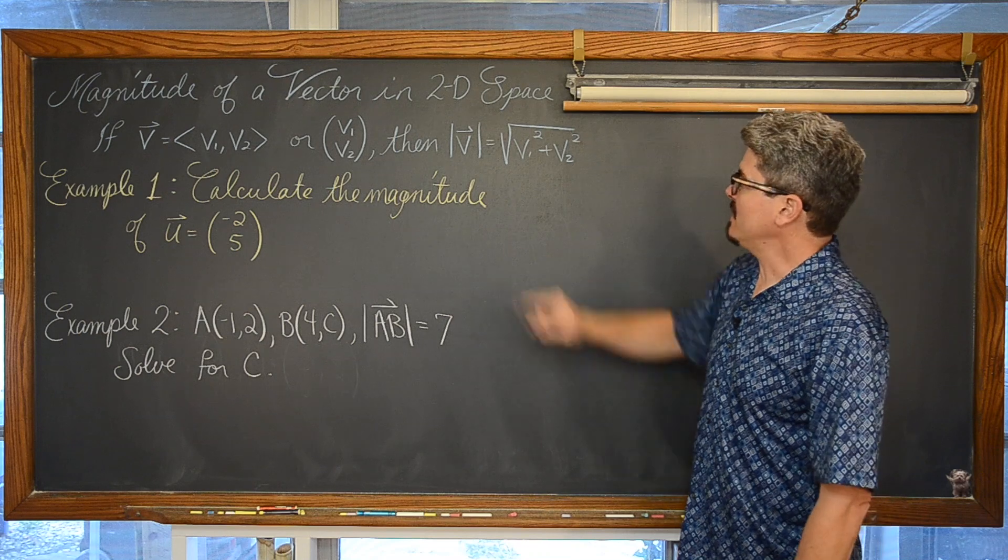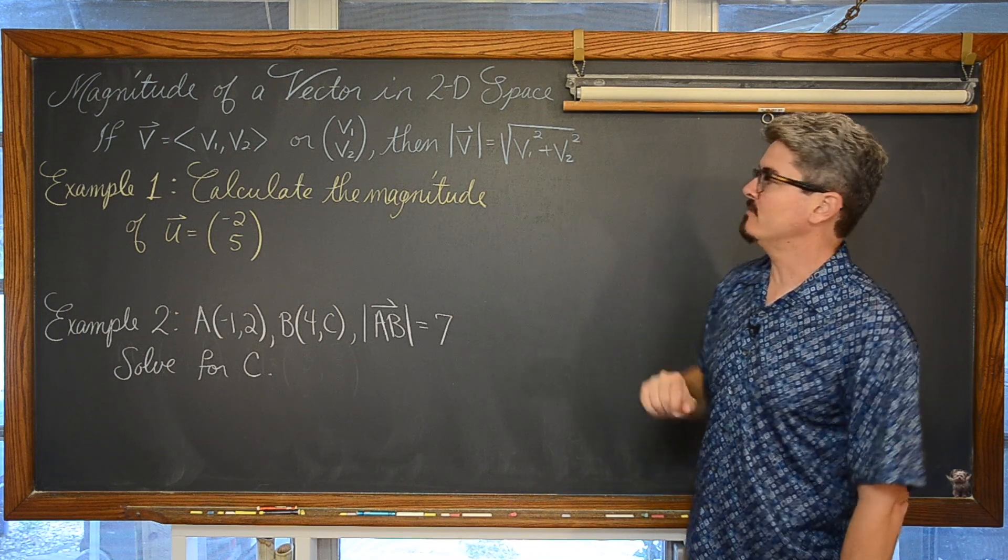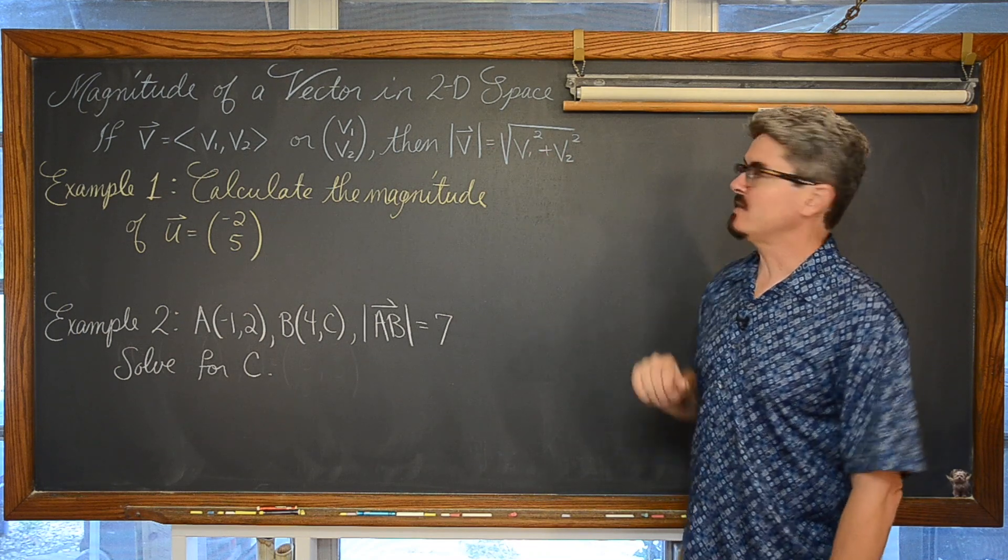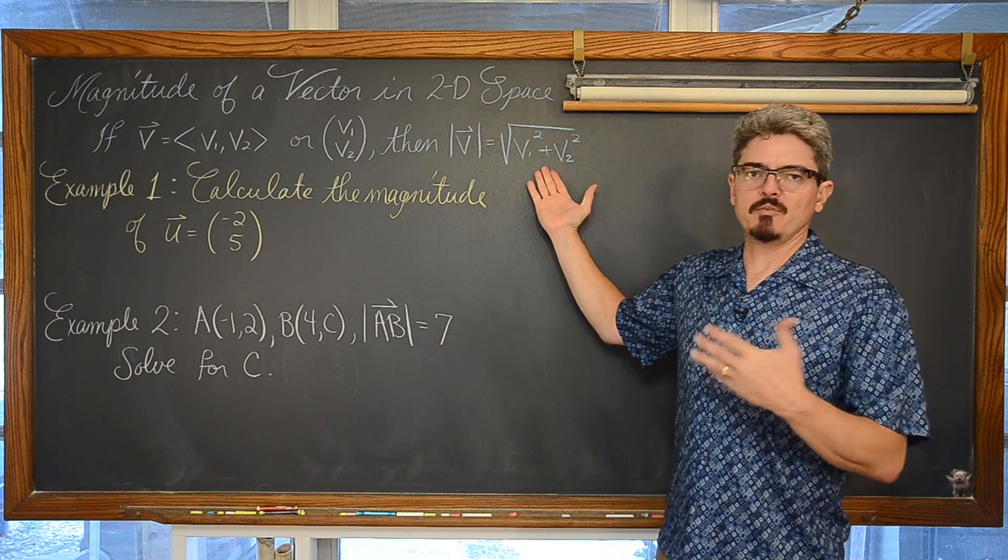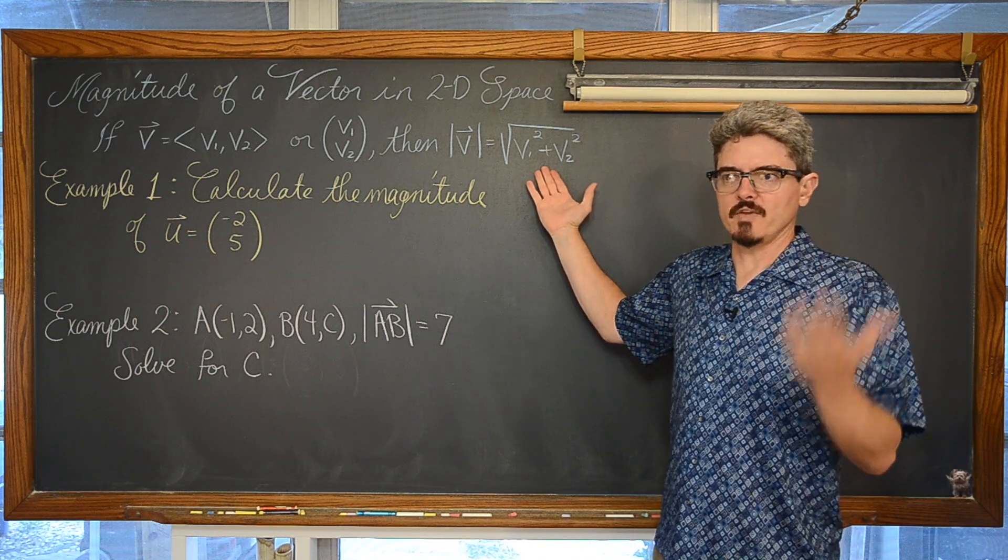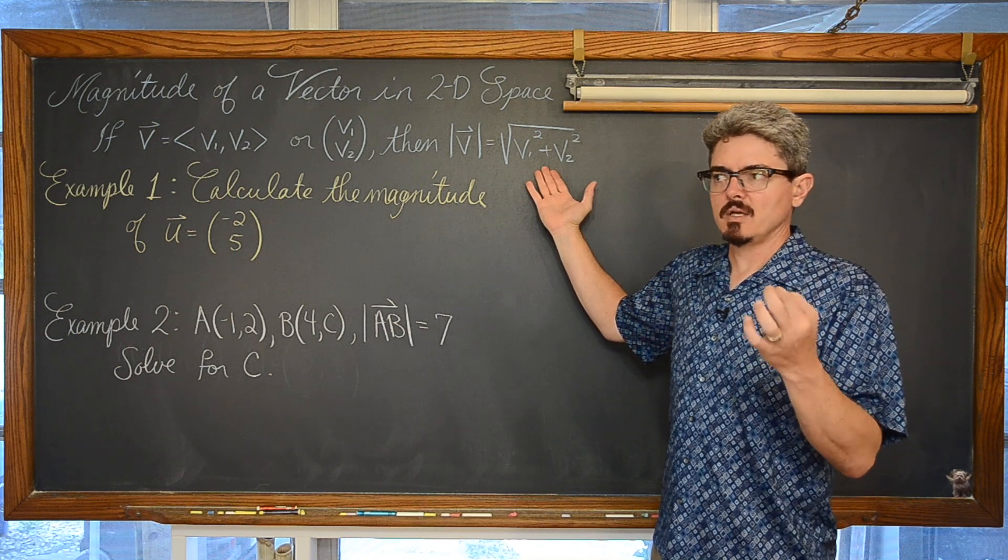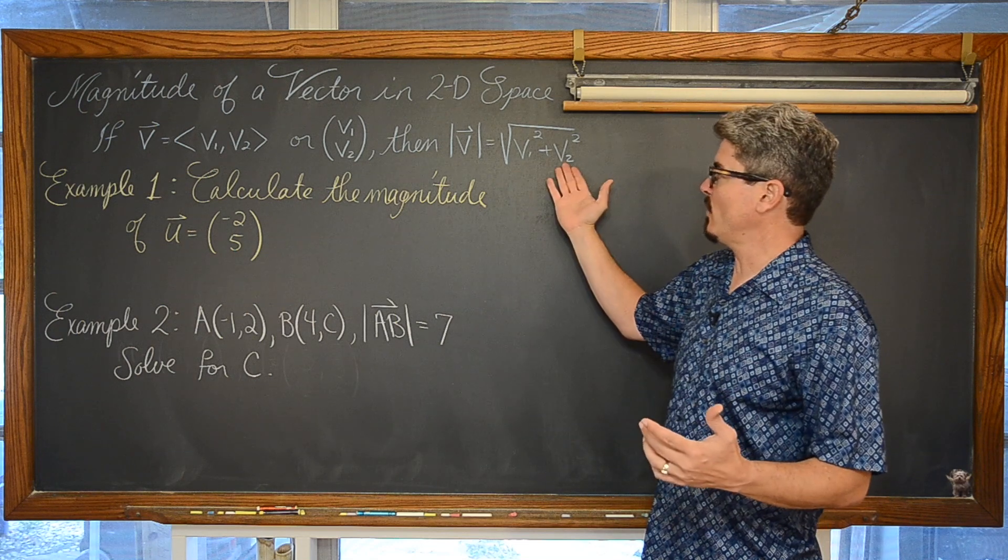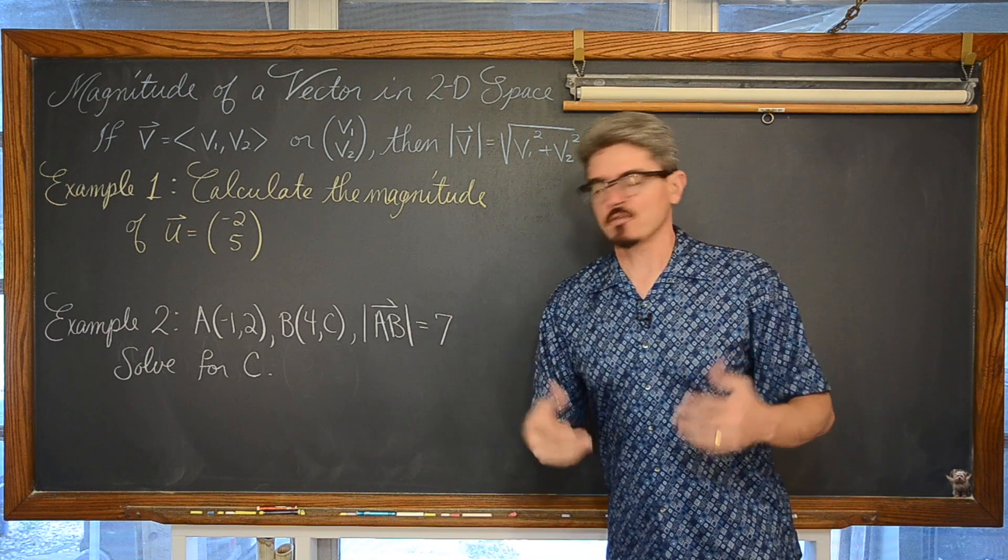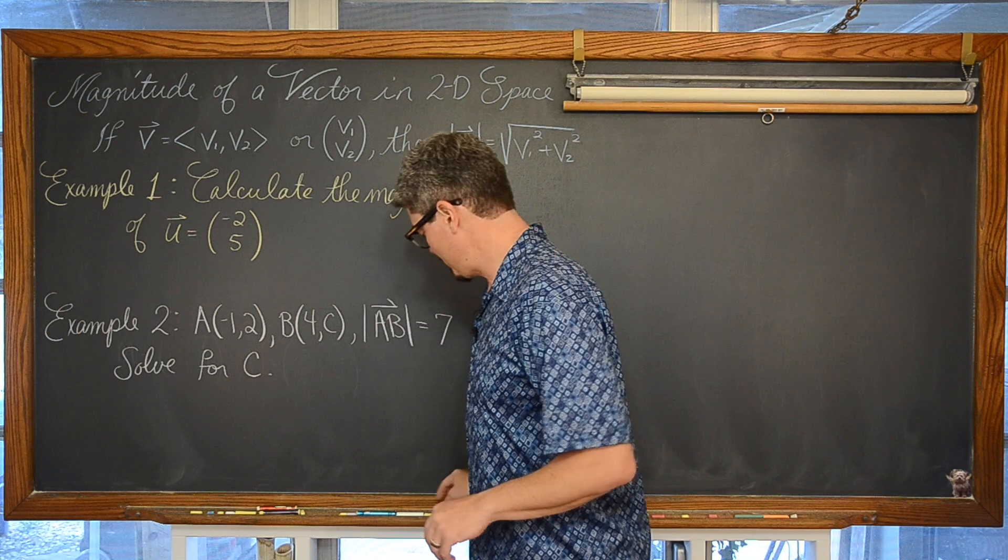Then the magnitude of v is equal to the square root of v sub 1 squared plus v sub 2 squared. It should look really familiar, right? Vectors are basically just directed line segments and the distance between two points is derived, that formula for distance is derived from the Pythagorean Theorem.